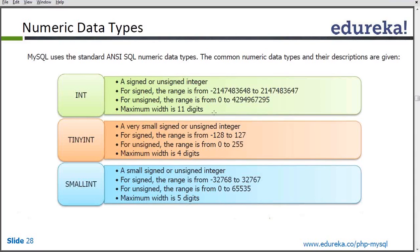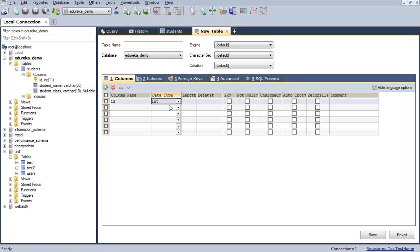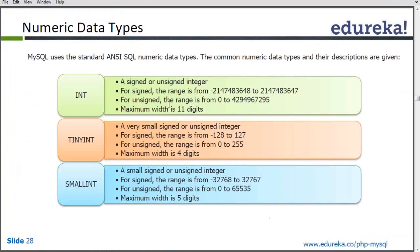Tiny INT simply means small integer value. Basically when you create a column and give it a data type, there are a number of bits and bytes that are reserved for that data type in the database. For example, if you have given integer, 8 bits will be reserved for that, whether there is a value or not — it will reserve that much space based on the data type. So if we give tiny INT, that means only 4 digits can be in that particular field, meaning the number of bits are limited, but if we use INT it reserves more space than tiny INT.